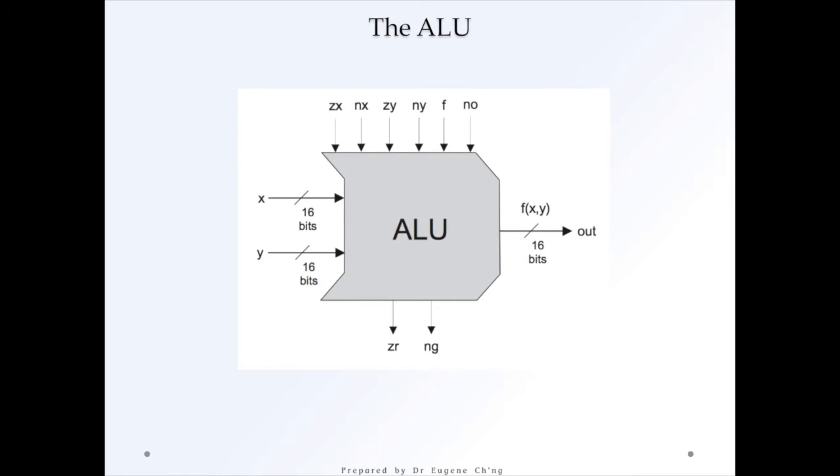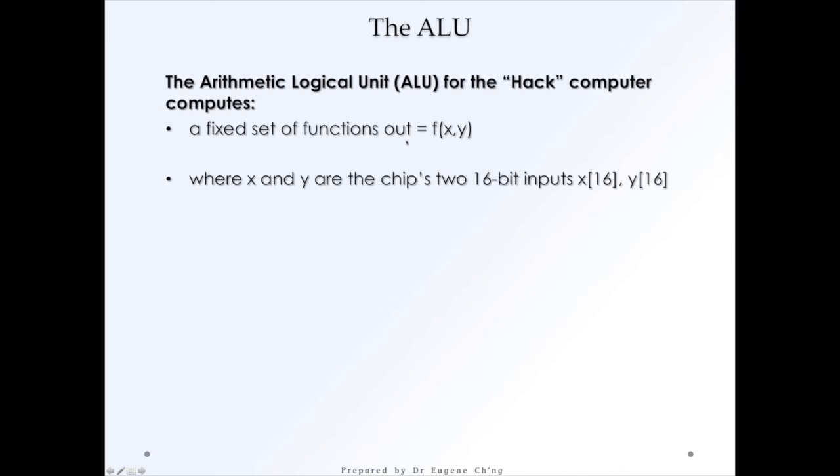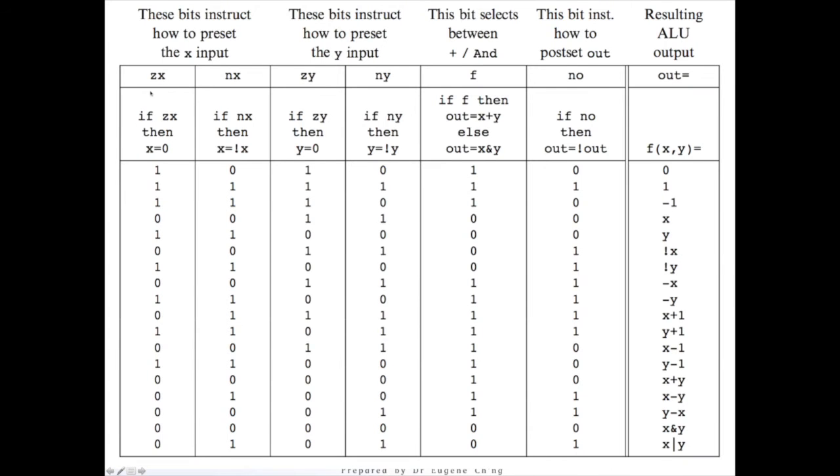So if we look at the ALU again, the six control bits are these values, and the input is here. So we look at this in this way. The input comes in. It has to pass through sequentially each of these control bits before the output comes out. Now, reading the table, we have the ZX and NX, which operates on the X value. We have the ZY and NY, which operates on the Y value. So we'll have a quick look first.